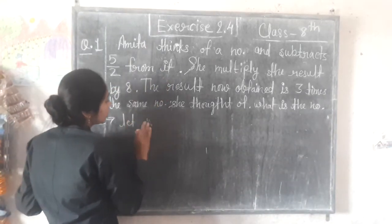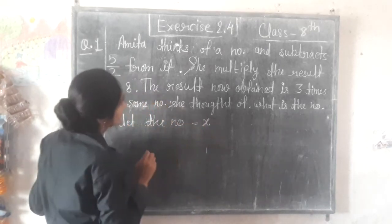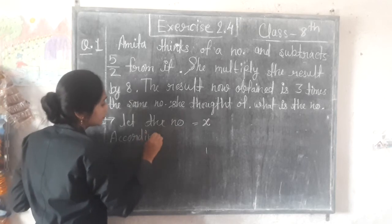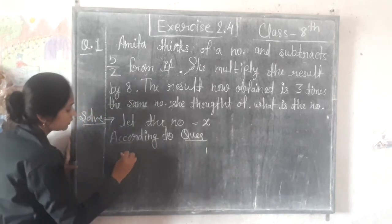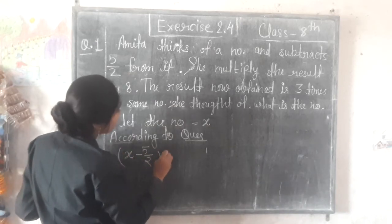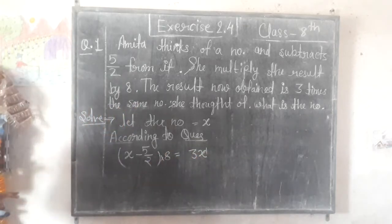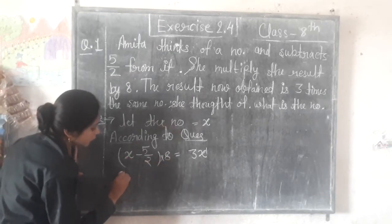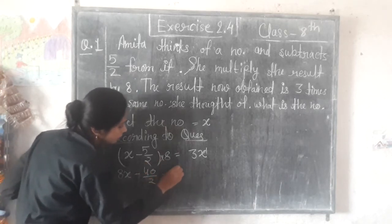Let the number be equal to x. According to the question, x minus 5 by 2 — she subtracts that, then multiplies the result by 8. So, 8 times (x minus 5 by 2) is equal to 3x.